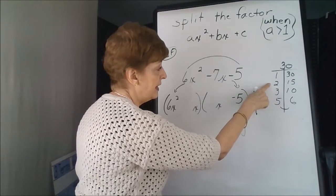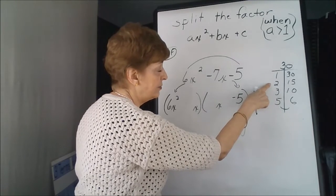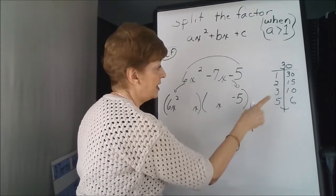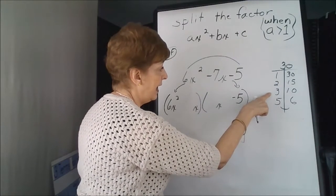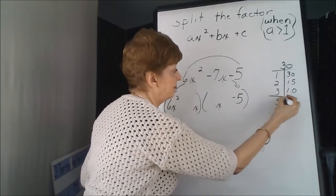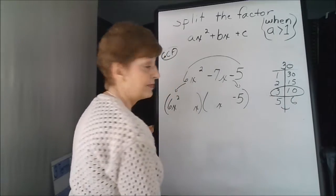2 and 15: if we add we get 17, if we subtract we get 13. Add 13, subtract 7.